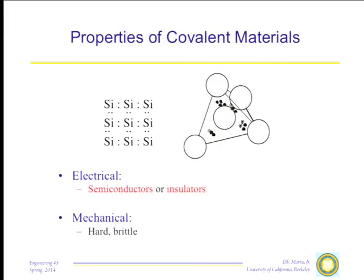Covalently bonded materials are invariably either semiconductors or insulators. In order to conduct electricity, electrons must move through the material, but all adjacent orbitals are already occupied, so an electron must be excited to a higher-level orbital to move through the material — requiring activation energy. If the activation energy isn't too big, it's a semiconductor; if it's large, it's an insulator. Carbon in the four-fold coordinated structure is diamond — an insulator. Silicon in the four-fold coordinated structure is a semiconductor.